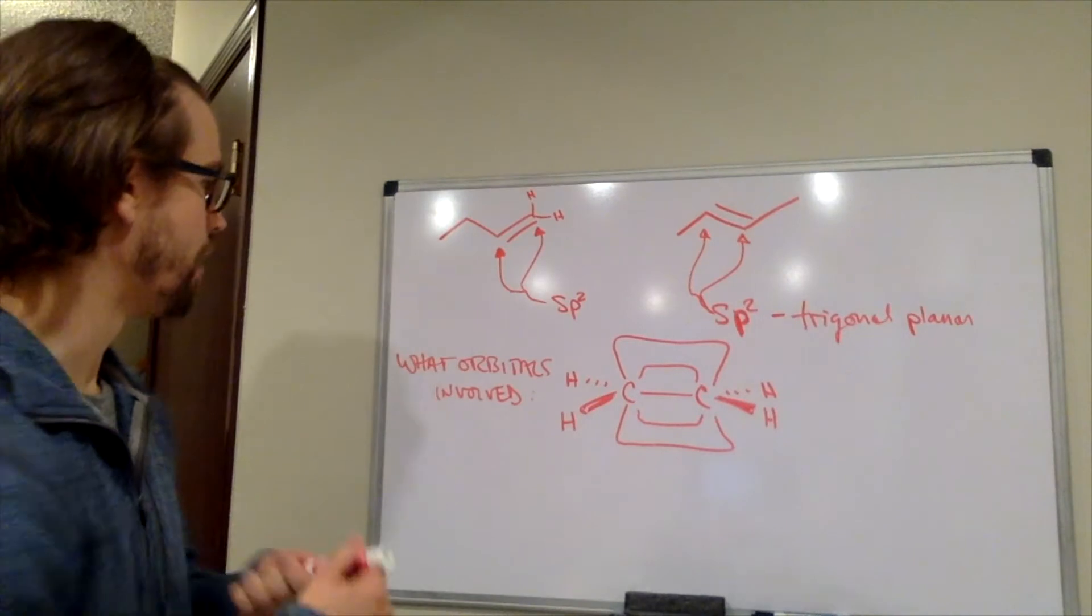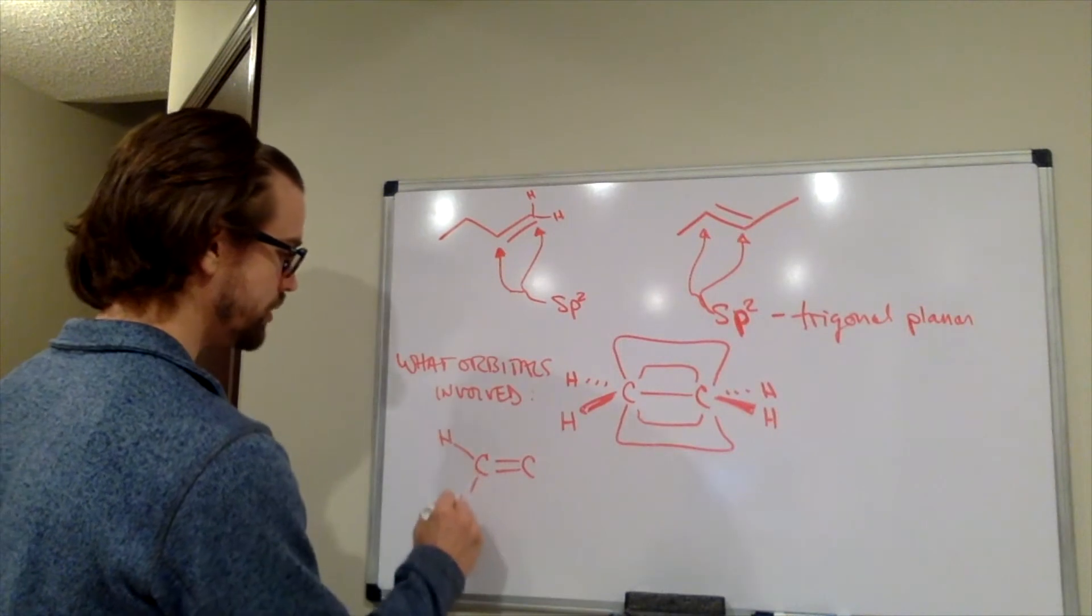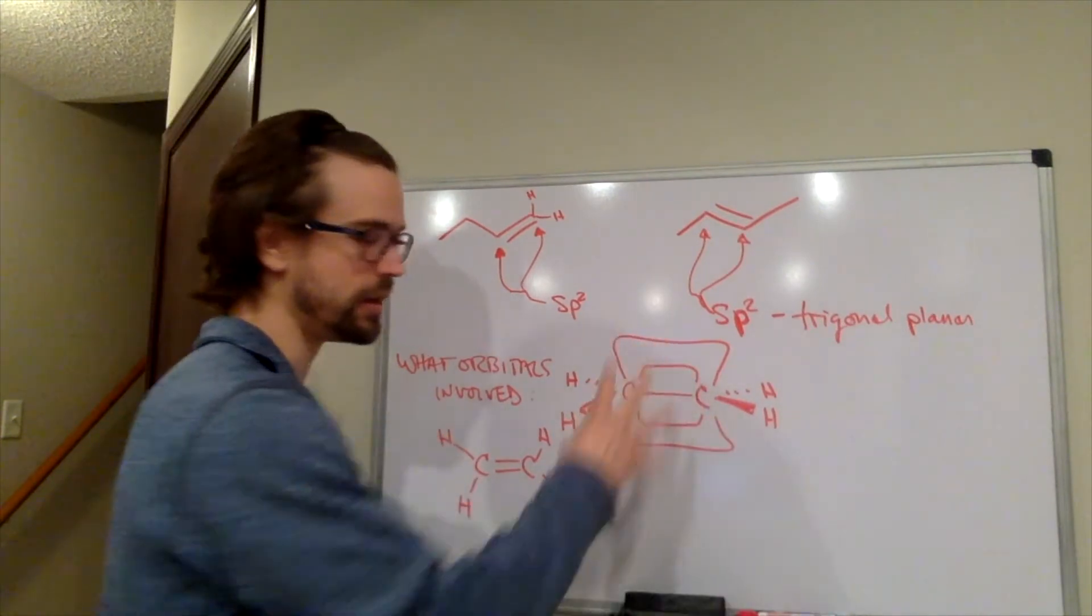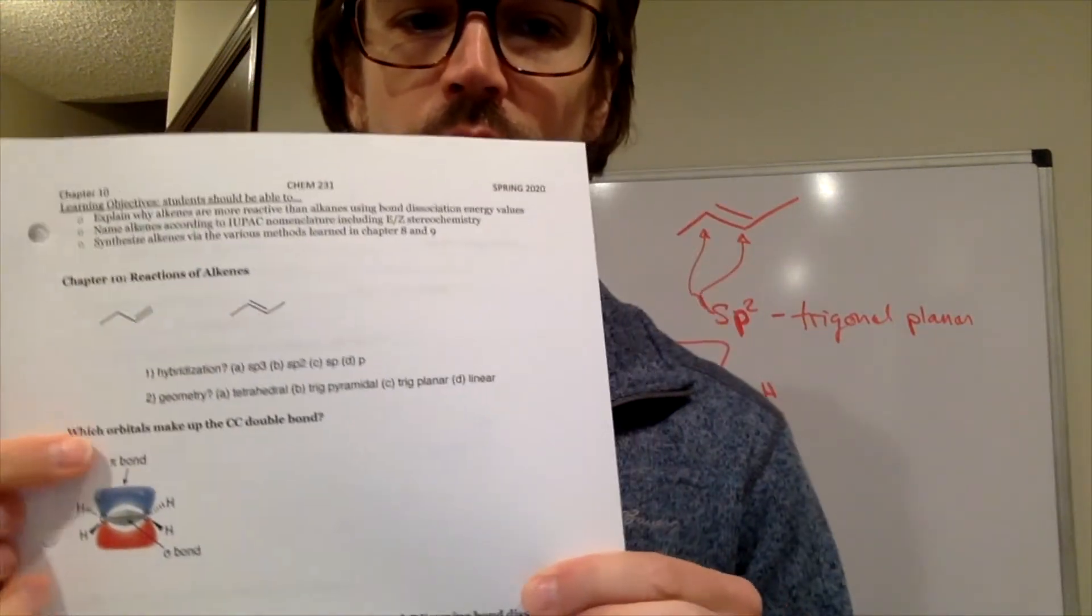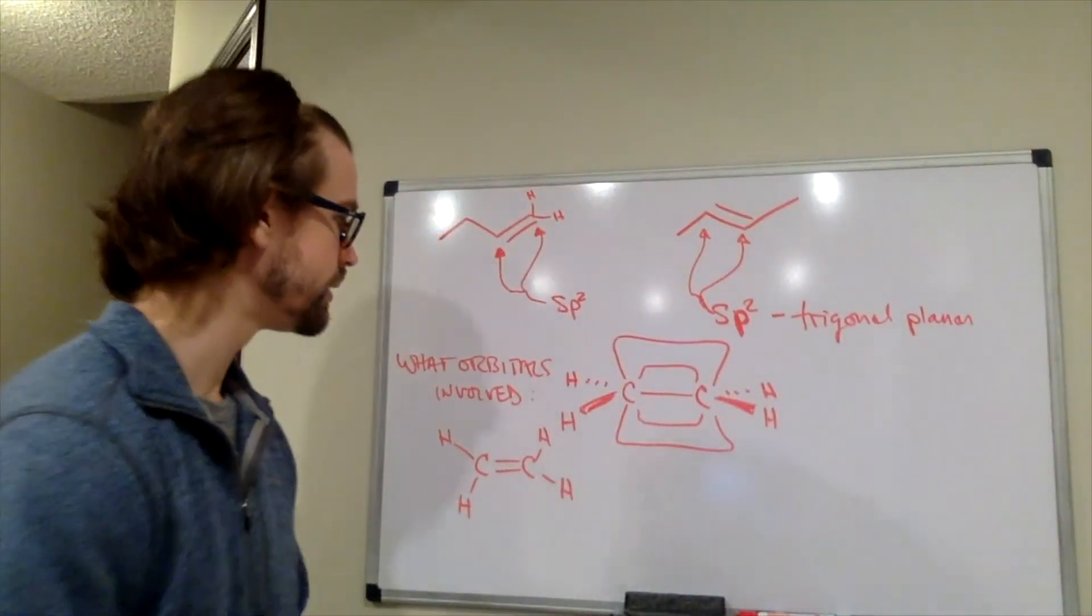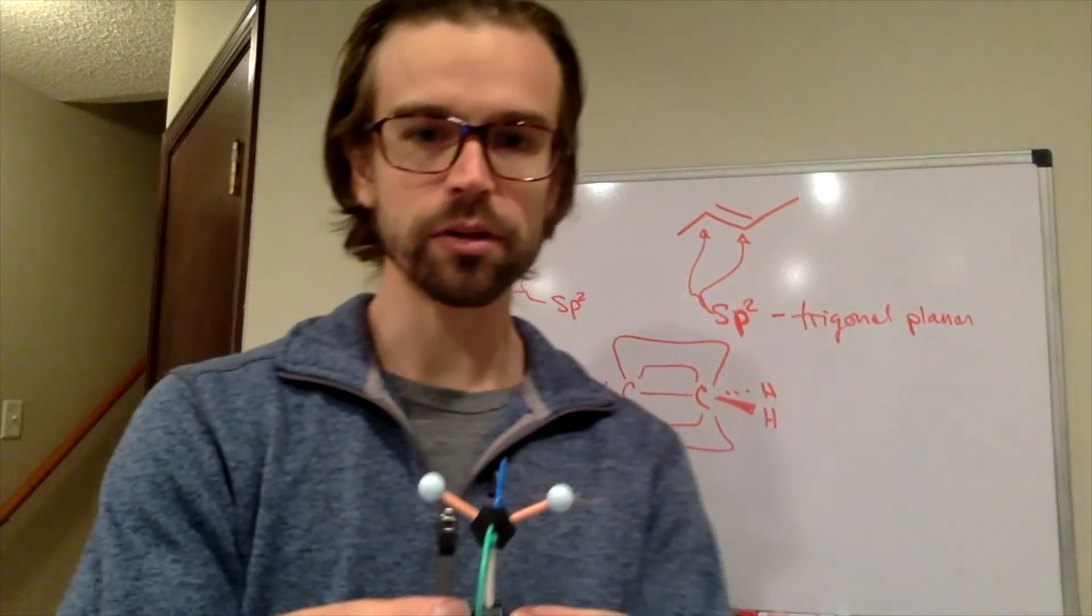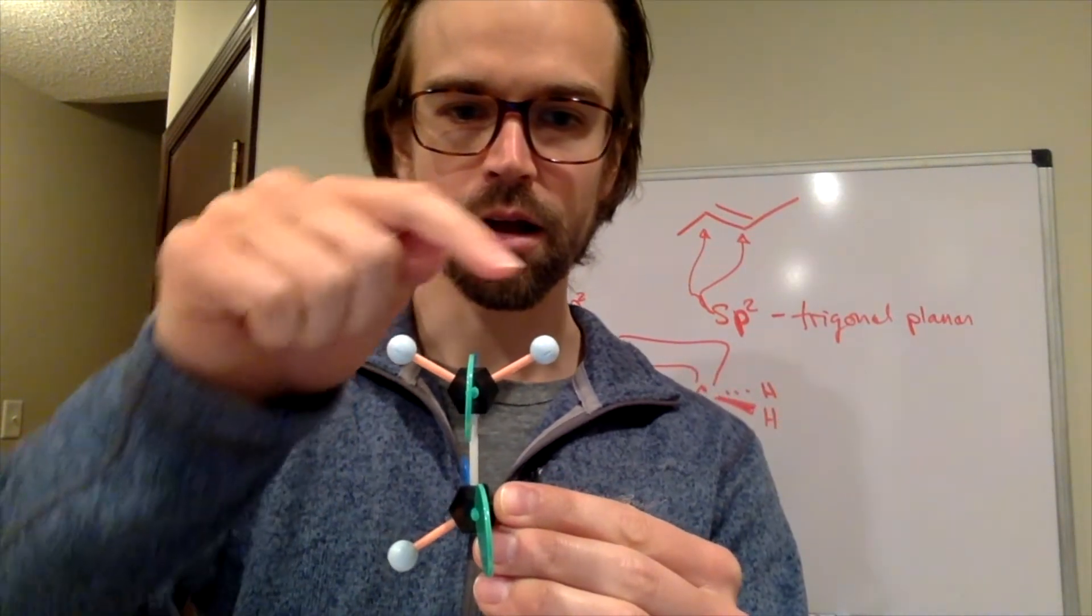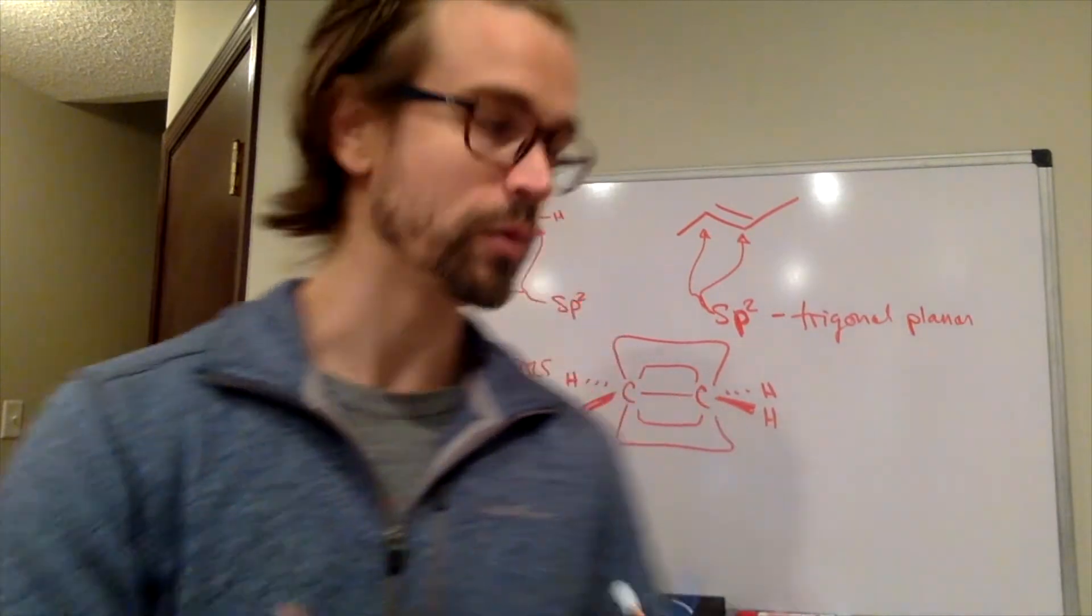Here we have ethene - C double bonded to C with two hydrogens on each of those. And here I've tried to draw in the orbitals that are showing up in your course packet. Those carbons are sp2 hybridized, so they have the trigonal planar arrangement of their atoms. If you look at the carbon here, all the atoms around that kind of make a triangle shape. That's where the trigonal planar comes from.